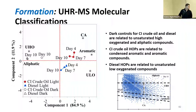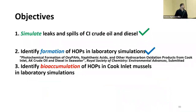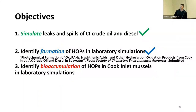We can classify compounds into aliphatic, unsaturated low oxygen, unsaturated high oxygen, and aromatic compounds. For whole Cook Inlet crude, we're mostly forming aromatic and condensed aromatic type compounds, while with diesel we're looking at more unsaturated low-oxygen type compounds. The identified compounds produced from diesel and crude oil are oxygenated but relatively low oxygen-containing aliphatic compounds. We're currently working to get that paper published.